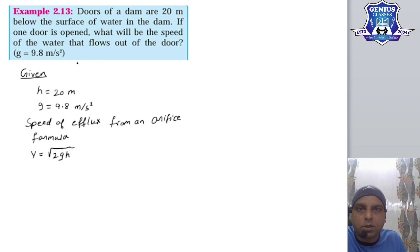What is the question? Now let's understand. The question states: Doors of a dam are 20 meters below the surface of water. How much height is 20 meters? You will see a dam. The dam is made. This is a dam and there is water filled up.